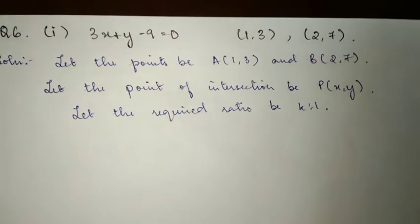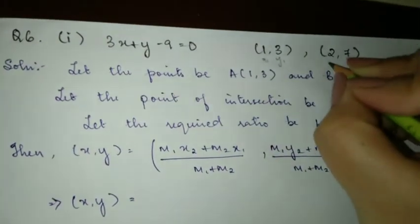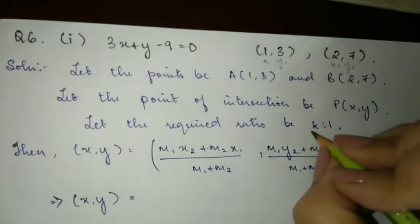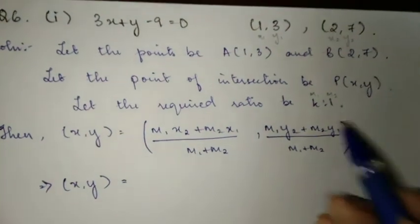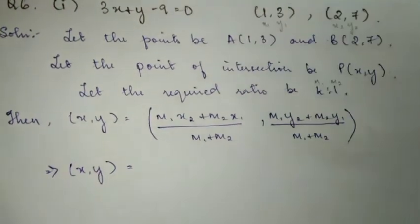Using the section formula, we have x1, y1, x2, y2. Let's substitute using the formula. For question number 4, we multiplied, so x in terms of k and y in terms of k.